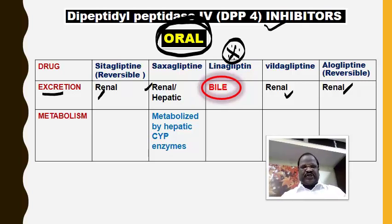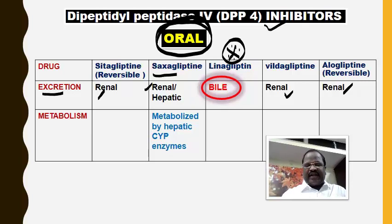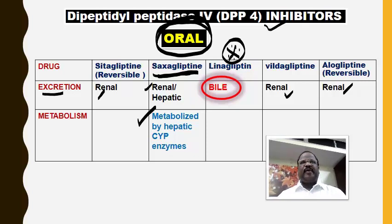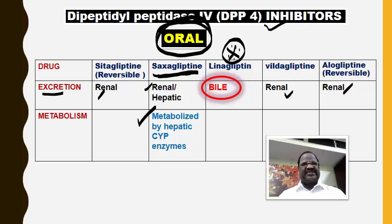Another popular MCQ question: among the DPP-4 inhibitors, only one drug — saxagliptin — undergoes metabolism by hepatic microsomal enzymes, the so-called cytochrome P450 enzyme. Since it is the only DPP-4 inhibitor metabolized by hepatic enzymes, this drug alone is prone to various drug interactions such as enzyme induction or enzyme inhibition type interactions.